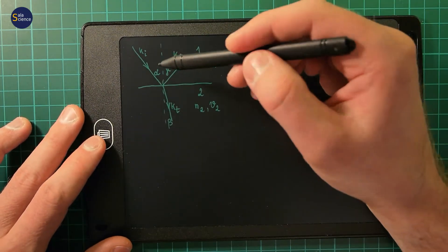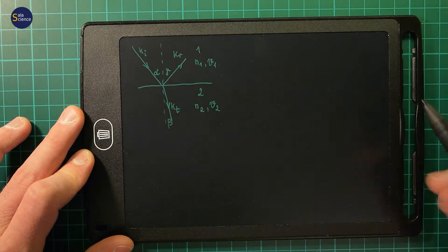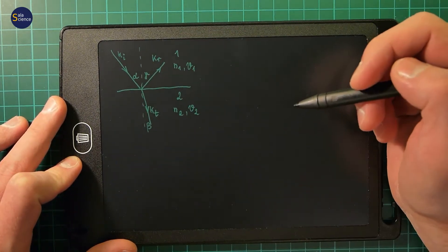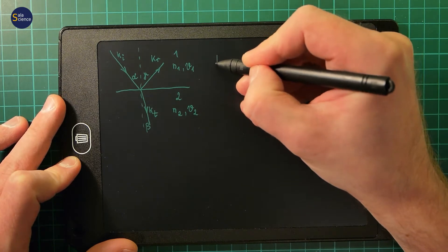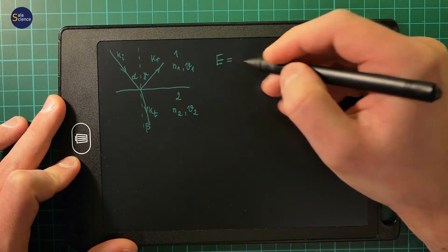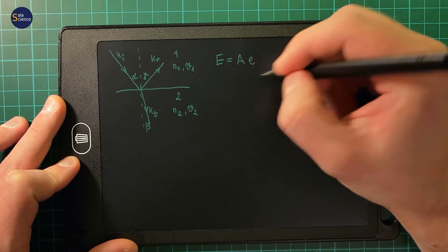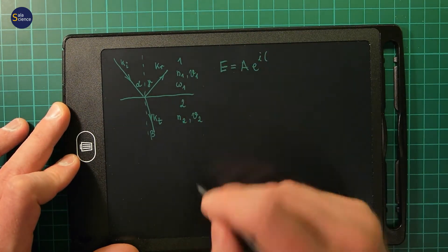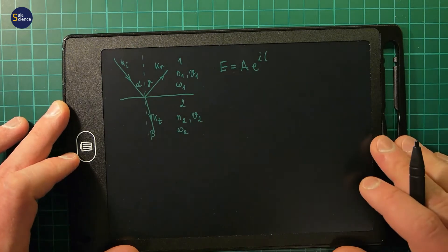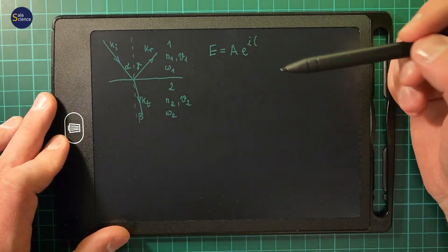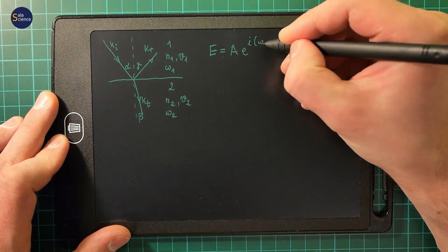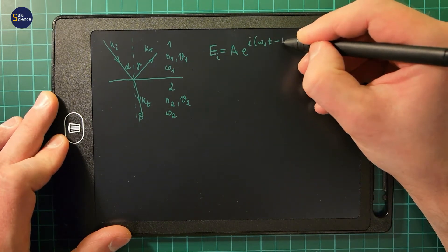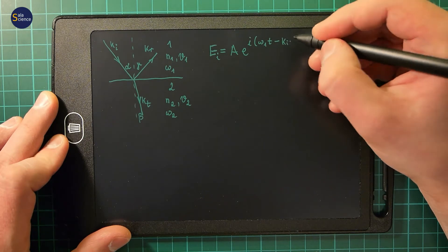I don't assume that the angle of incidence is equal to the angle of reflection. So we have three different waves. I will have the electric field, which is A times e to the i, and let's assume that we have frequency omega 1 in the first medium and omega 2 in the second medium. I don't assume that these frequencies are equal, so I will have omega 1 times t minus ki times r.